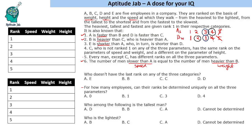Setting up speed, weight, and height columns: in Case 1, A is third in speed and B is third in weight. In Case 2, A is fourth in speed and B is second in weight. Now, since B is heavier than C and C is heavier than A, we have the weight order B, C, A.